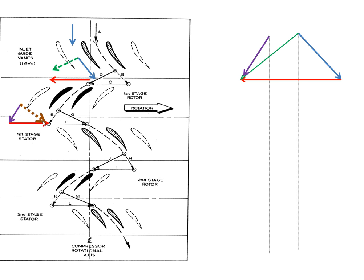The engine is still rotating, so there's that vector. The combination of that vector and that vector means the air is leaving the compressor stage with a velocity and direction as shown here. The difference between the air coming in and the air coming out is the change in whirl speed, and that is proportional to the amount of power that the engine absorbs.